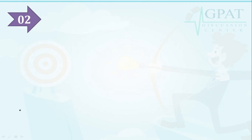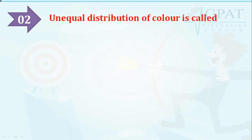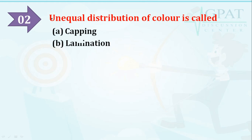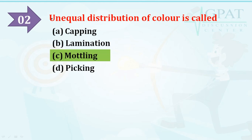Question number two: unequal distribution of color is called — options are: capping, lamination, mottling, or picking. The right option is mottling.